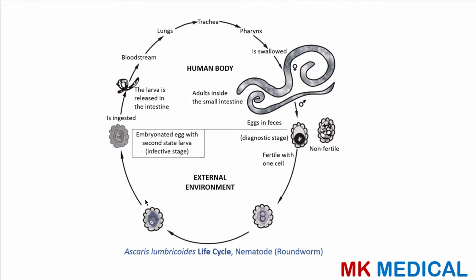Here is the life cycle. Eggs are present in feces — a fertile one with one cell and a non-fertile one. The embryonated egg with second-stage larvae is the infective form. Once ingested, larvae are released in the intestines, enter the bloodstream, pass through the lungs and trachea, crawl up to the pharynx where they are swallowed, pass through the stomach, and reach the small intestines where they hook on and may suck blood or cause blockage, obstruction, and malabsorptive syndromes.